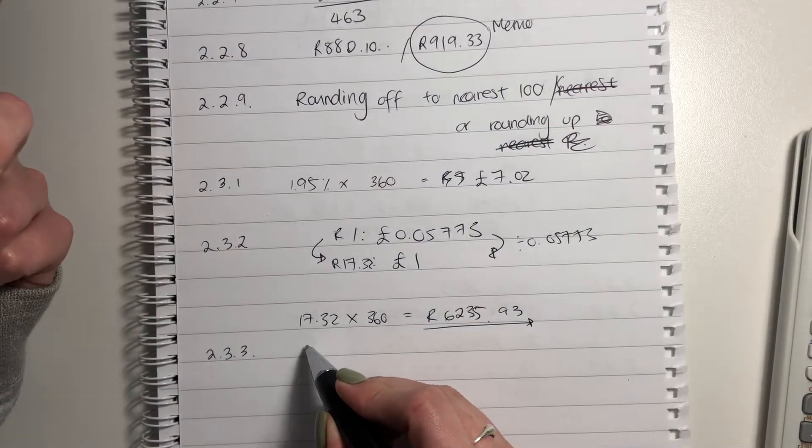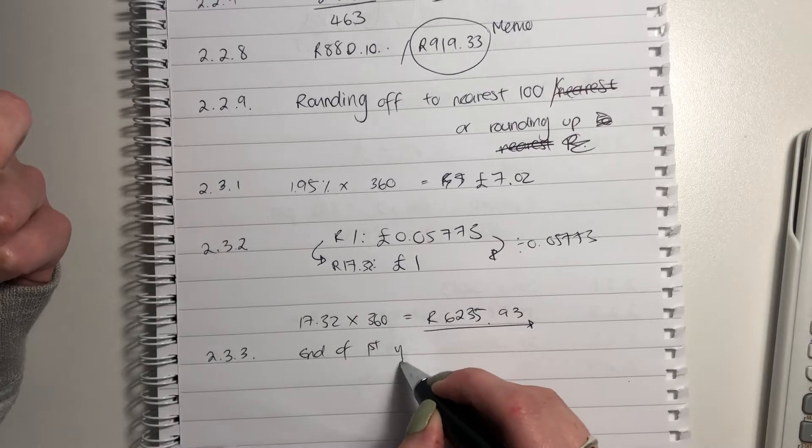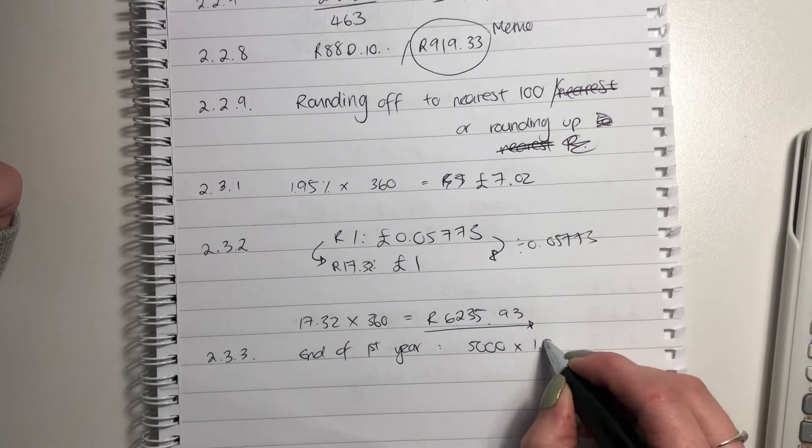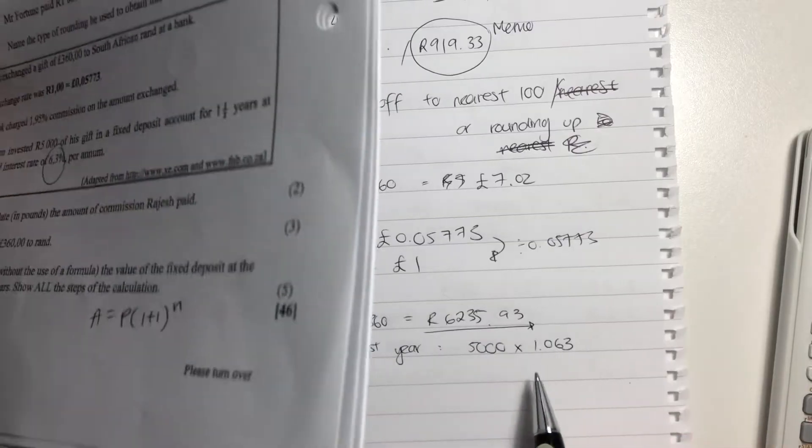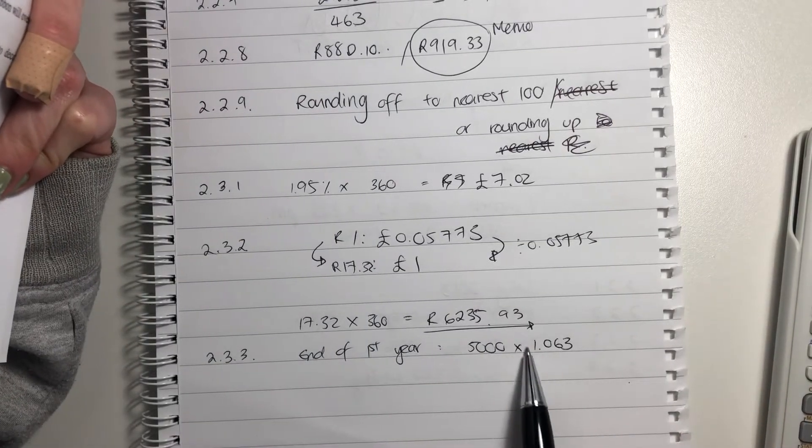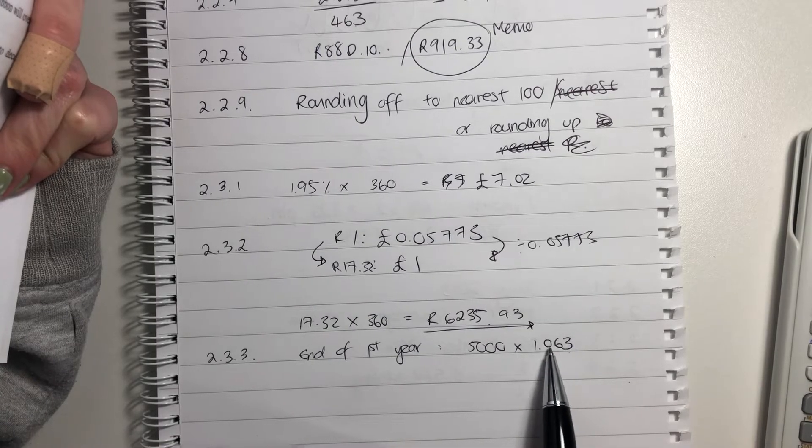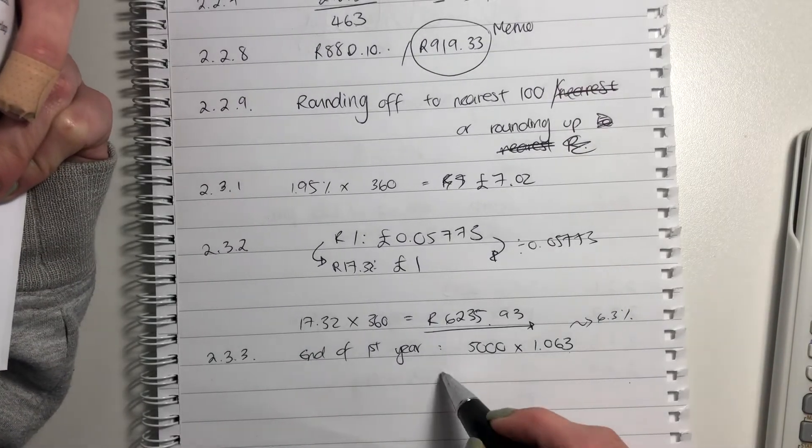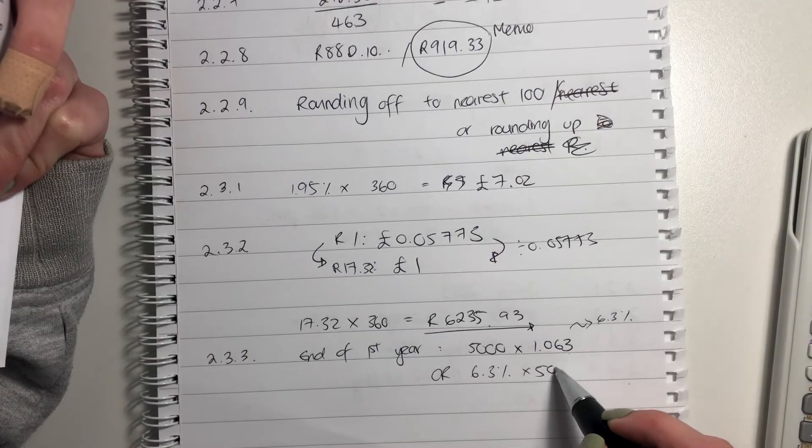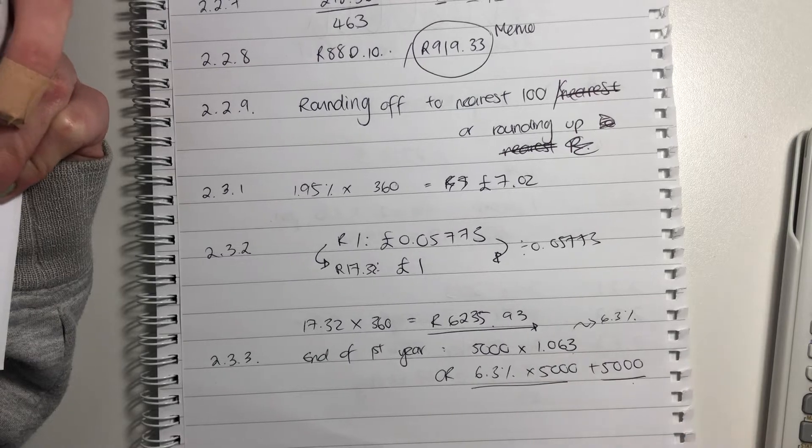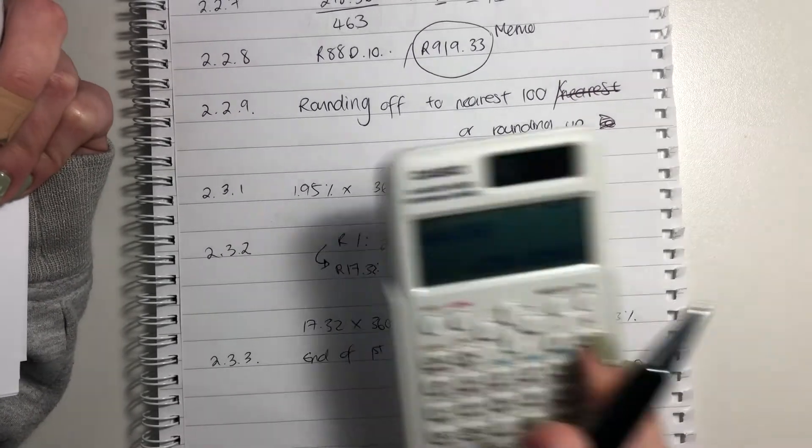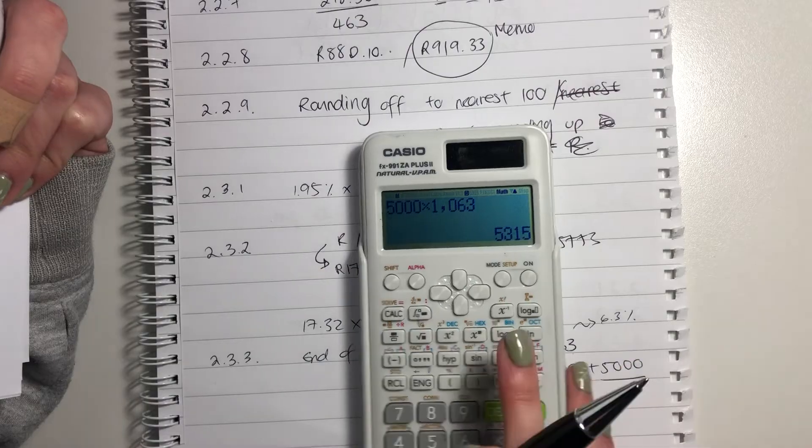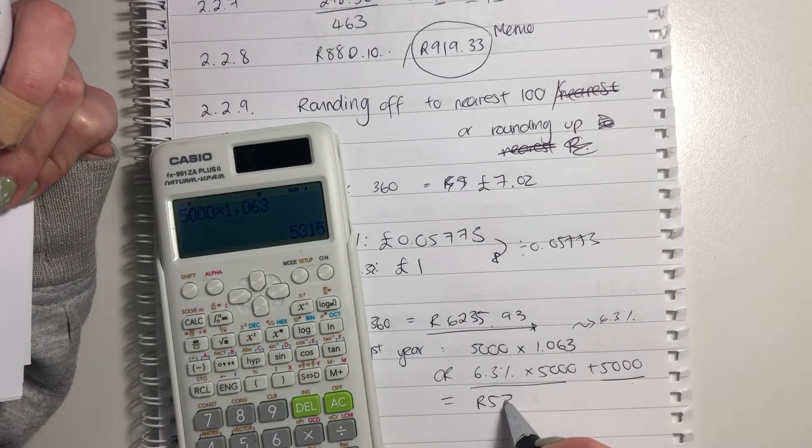So at the end of the first year, he would have had 5,000 times by this interest rate. Now you could be saying, where does that come from? Well, remember, he's still going to have his 5,000. That's why there's one. And he's going to increase that by 0.63, which is effectively the 6.3%. If you don't know how to do that, what you can do is you can say 6.3% times 5,000 plus 5,000. So this is the interest, this is the capital, or what he put in originally. Either will give you the same answer. I'm just going to do it in one simple step like this. And you'll say that at the end of that year, he had 5,315.